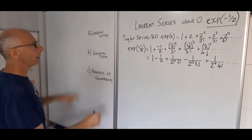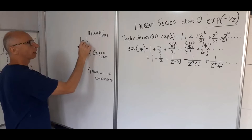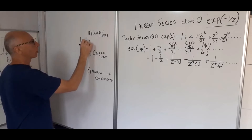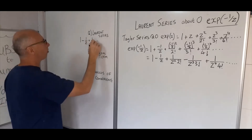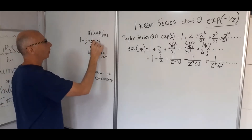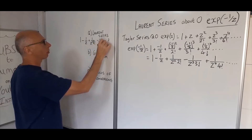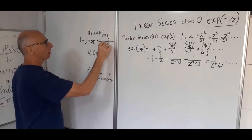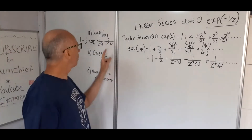So we've got: one minus one over z plus one over two factorial z squared, minus one over three factorial z cubed, plus one over four factorial z to the four. That's our solution to the first part.